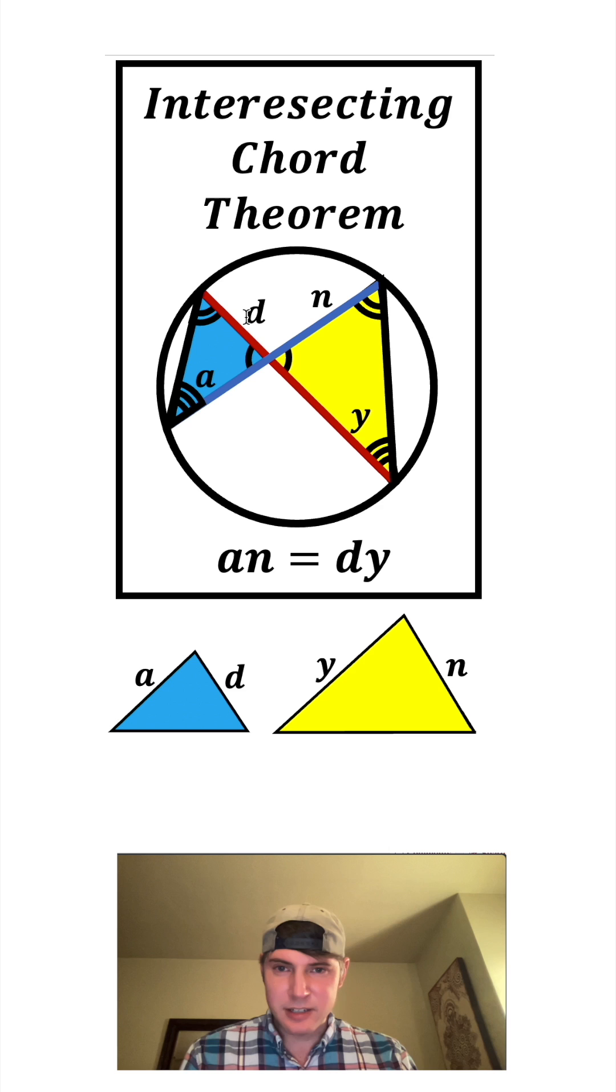In the blue triangle, here's the a and the d. And in the yellow triangle, here's the y and the n. So if we set up our proportion, we know that a over y has to be equal to d over n.